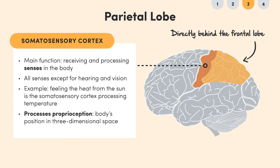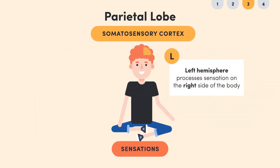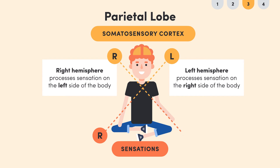The somatosensory cortex also processes proprioception, which is the body's position in three-dimensional space. Additionally, the somatosensory cortex on the left hemisphere processes sensation on the right side of the body, while the somatosensory cortex on the right hemisphere processes the body's left side. So if you feel pins and needles on your right leg, it's the left side of the somatosensory cortex working.